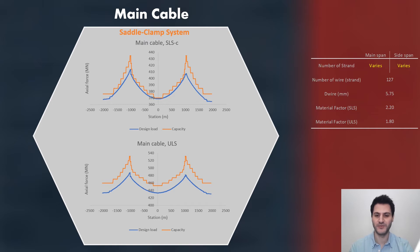An iterative approach has been followed with Global Analysis Model 2, as dead load of the main cable decreased each time when strands are reduced. For the verification, nothing has been changed for the saddle clamp system but the number of strands.